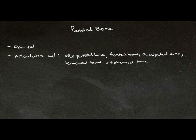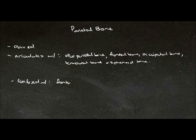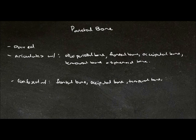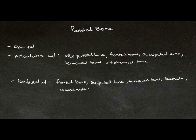Knowing the articulations helps you orientate the bone. Because these bones are disarticulated, it's easier to confuse one bone with another. The parietal bone can get confused with the frontal bone, the occipital bone, the temporal bone, the scapula, and the innominate. This is because all of these bones are flat bones, similar to the parietal bone itself.